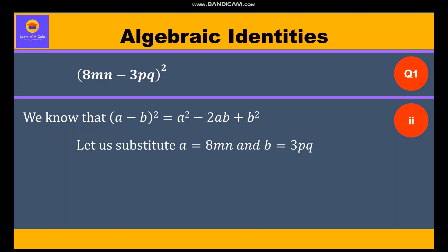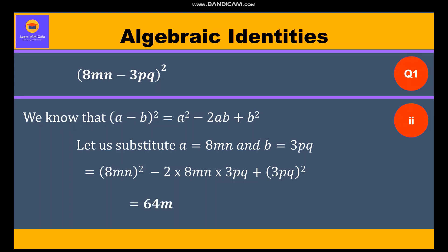We will get (8mn) squared minus 2 times 8mn times 3pq plus (3pq) squared, which gives us 64m²n² minus 48mnpq plus 9p²q².